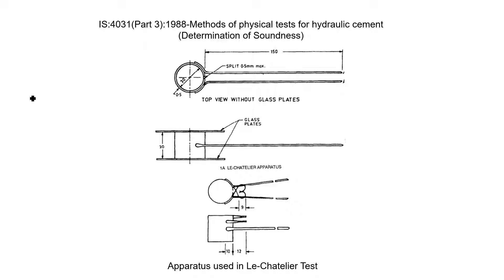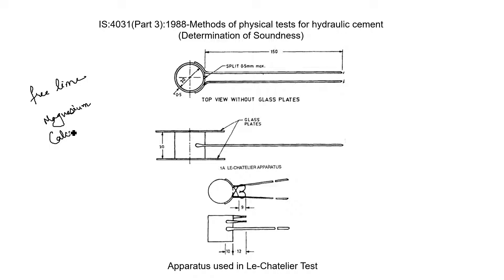The unsoundness in cement is due to the presence of excess free lime. It is also likely that too high a proportion of magnesium content or calcium sulphate in cement may cause unsoundness. Soundness of cement may be determined by two methods: the Le Chatelier method and the autoclave method.